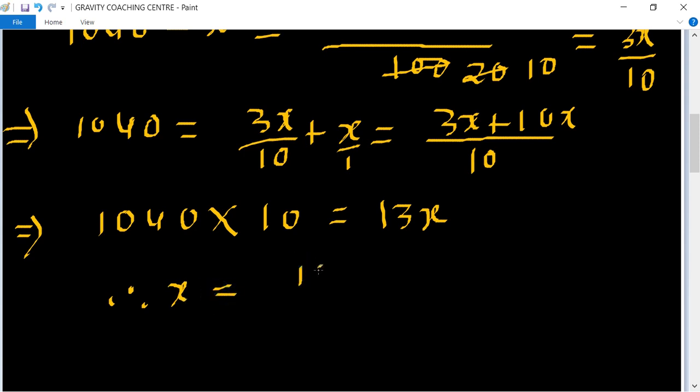Therefore x equal to 1040 into 10 upon 13. So table of 13, 13, 8 here: 1, 0, 4. So 18 to 10 equal to 800.